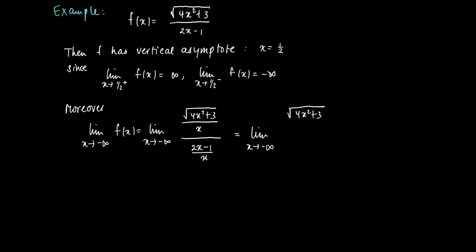By doing so, we find the limit as x approaches minus infinity of √(4x² + 3) divided by -√(x²). Watch out—we get a minus sign because x is supposed to be negative. We can write x² under the square root sign and find -√(4x² + 3)/x² divided by (2 - 1/x).